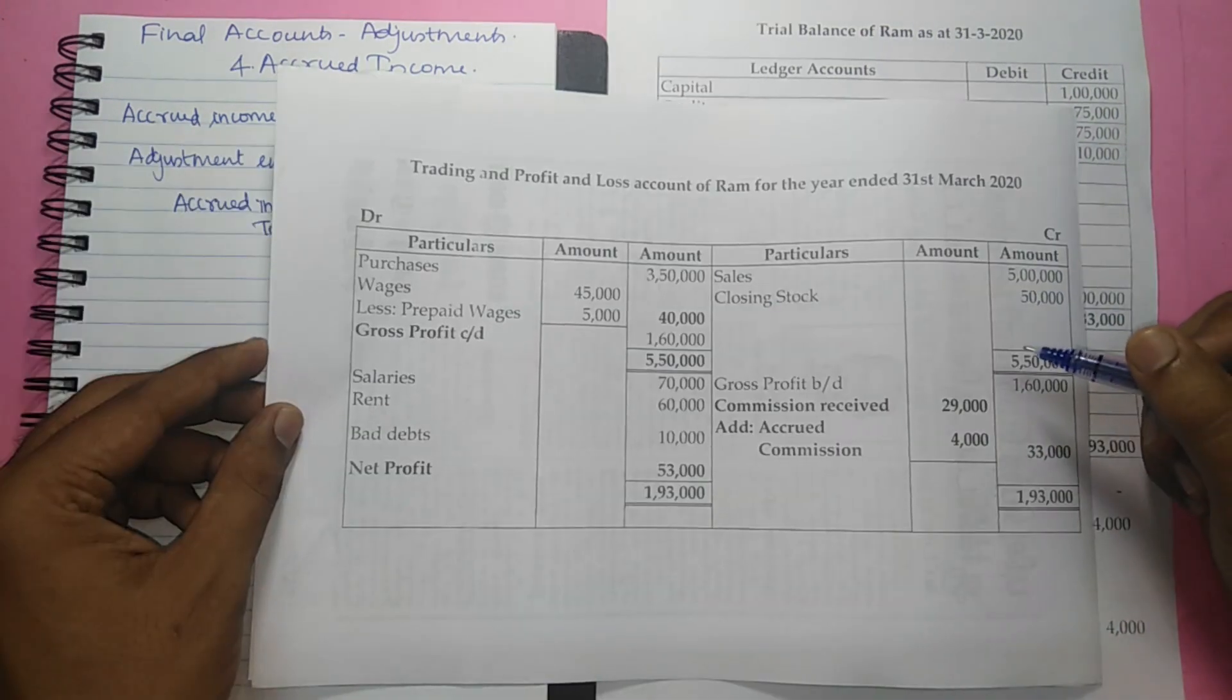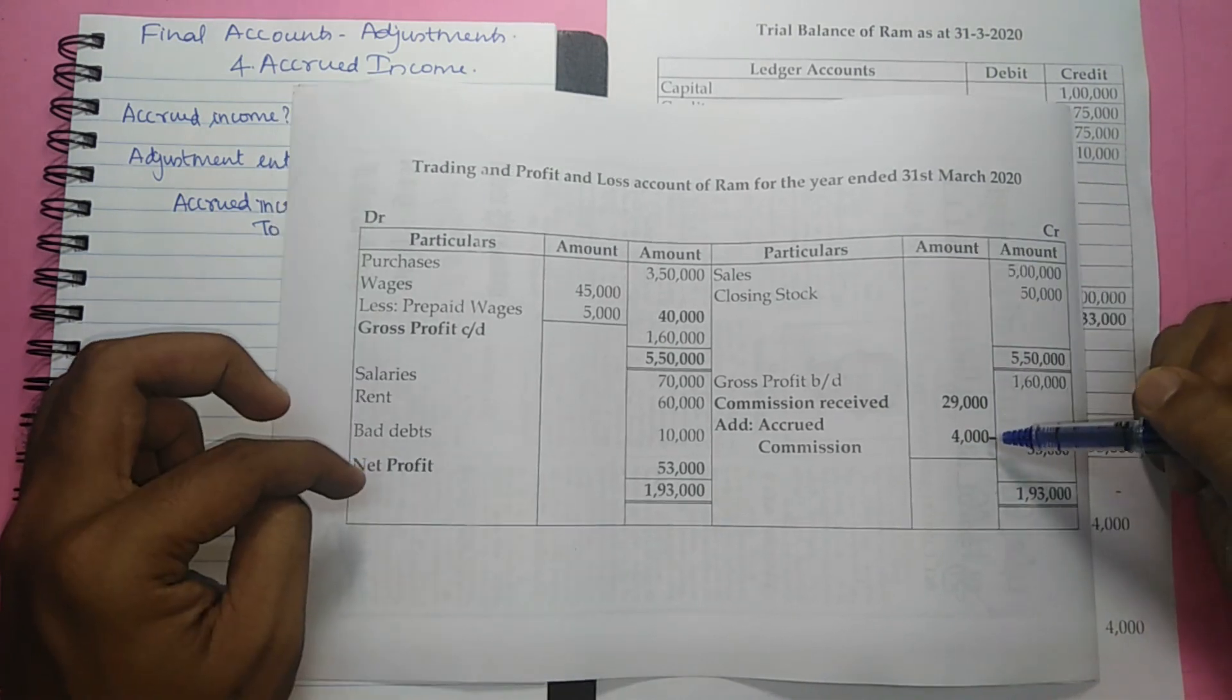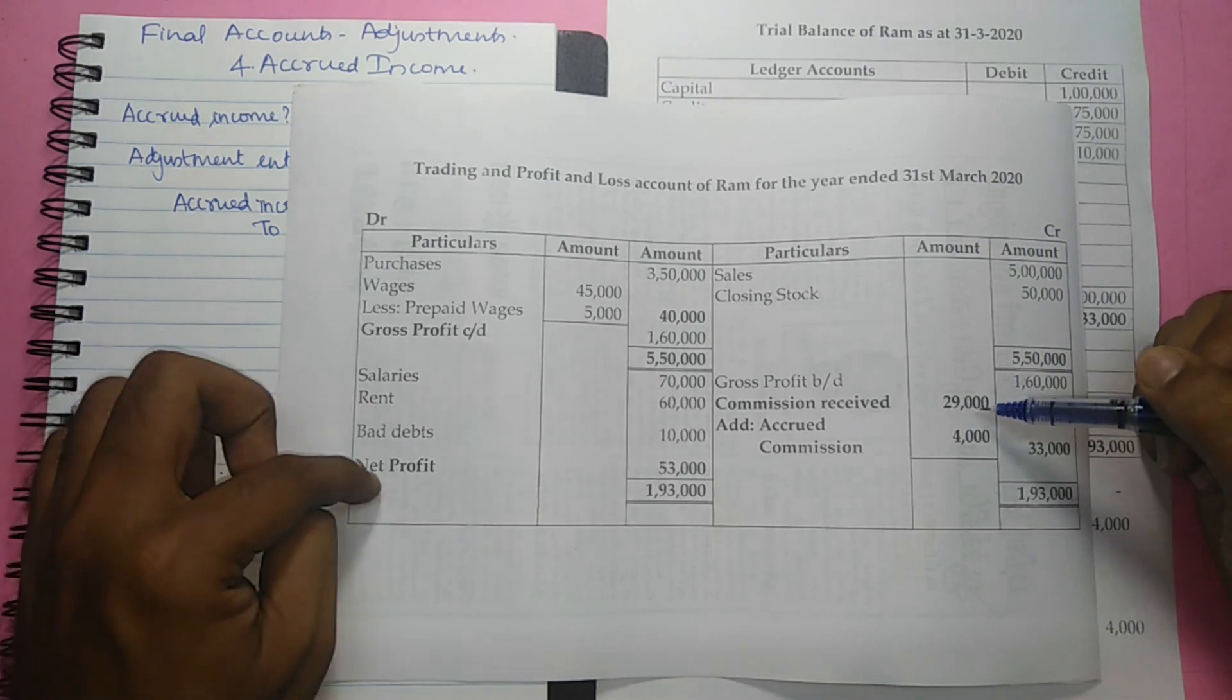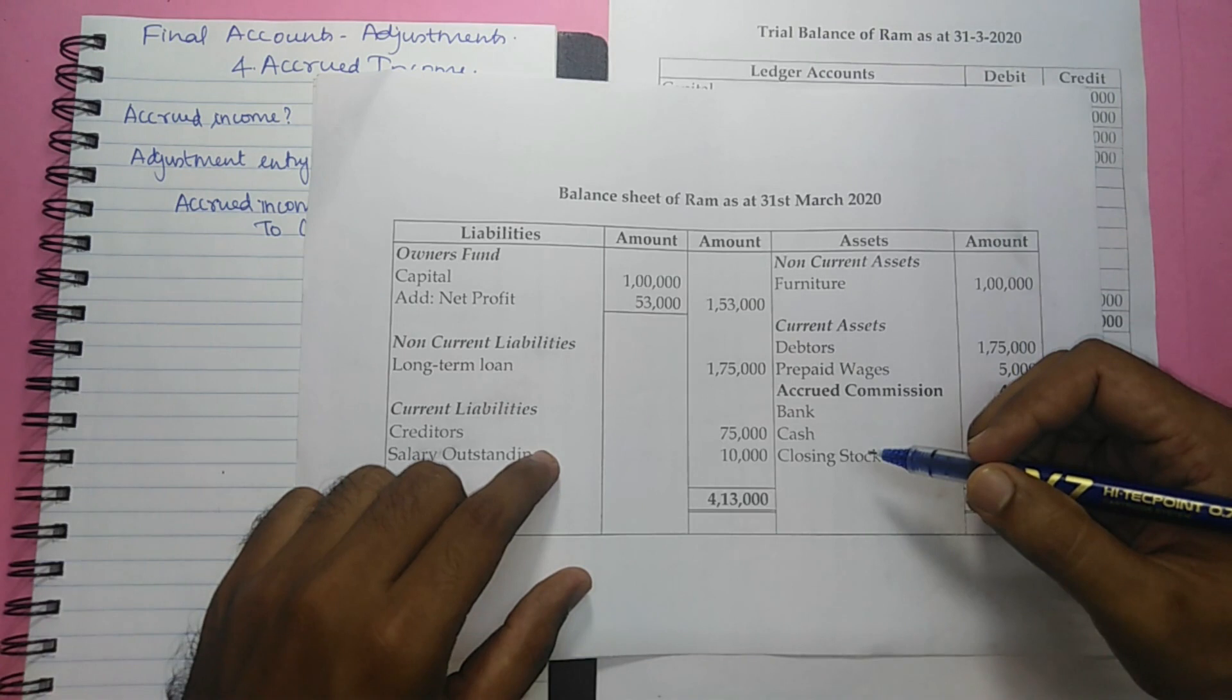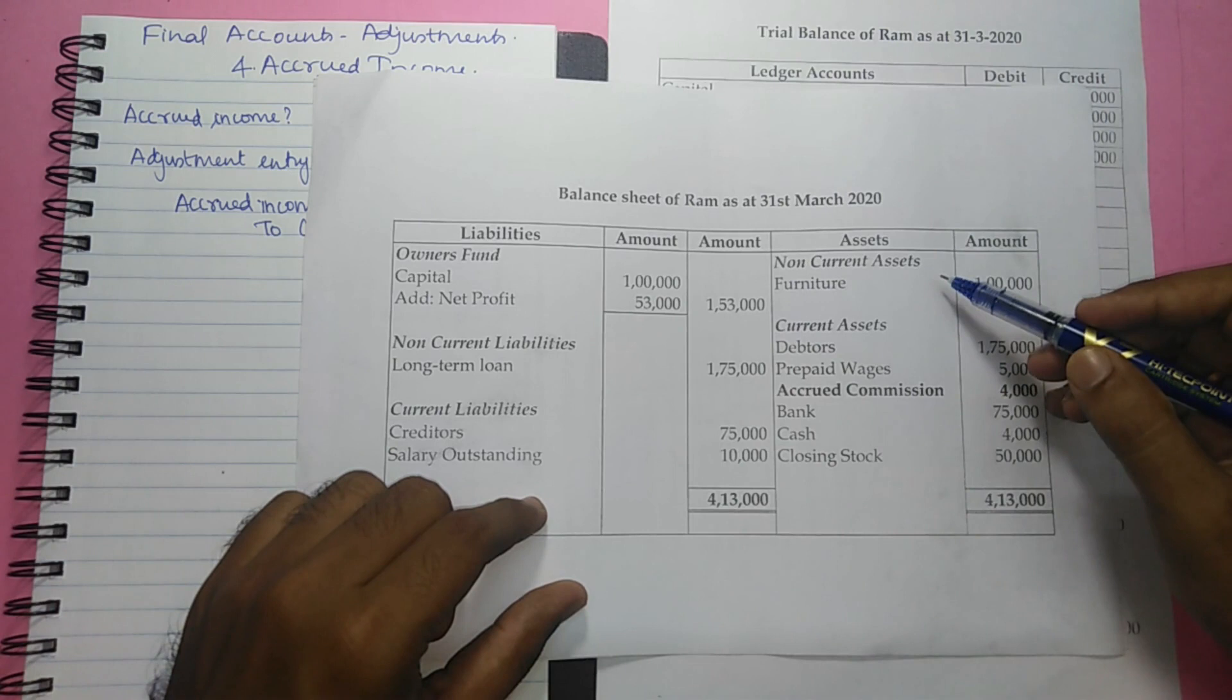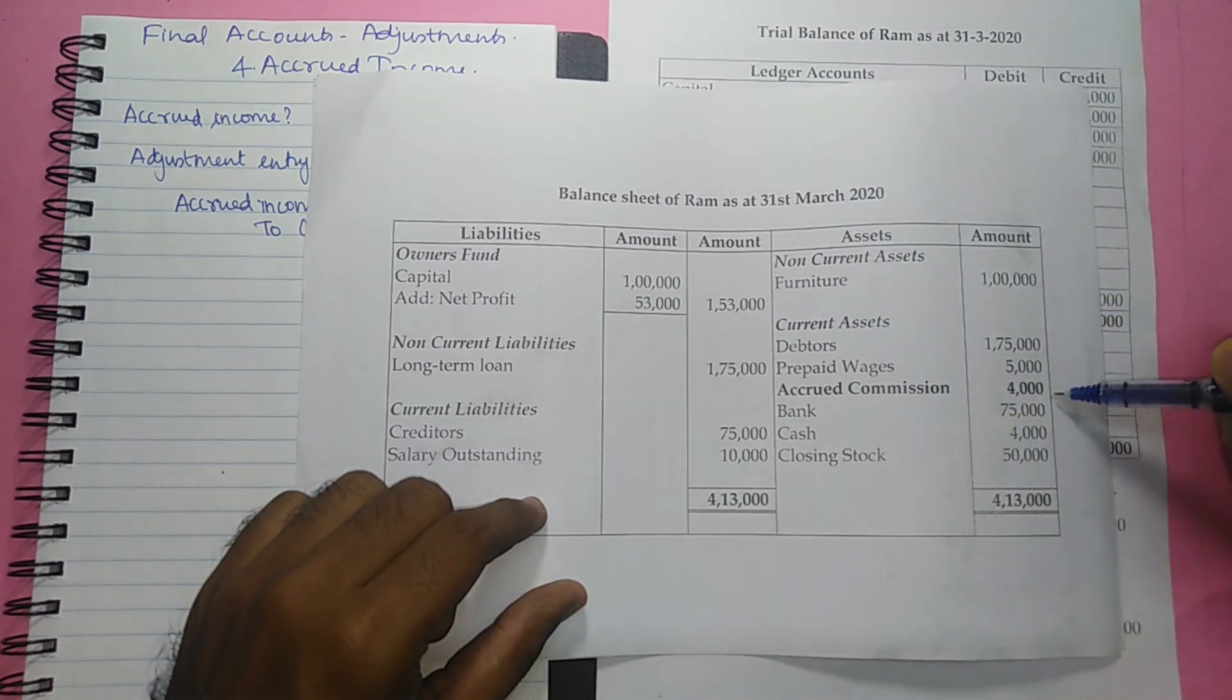Now let us have a look into the effect of this adjustment in the profit and loss account. Since Rs. 4,000 gets added to the income, the profit also increases by Rs. 4,000. Since the net profit increases by Rs. 4,000, the liability side increases by Rs. 4,000. The asset side also increases by Rs. 4,000 because a new head accrued commission comes into picture. Therefore the balance sheet tallies.